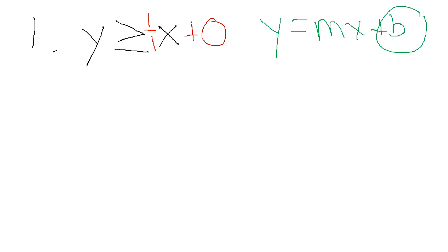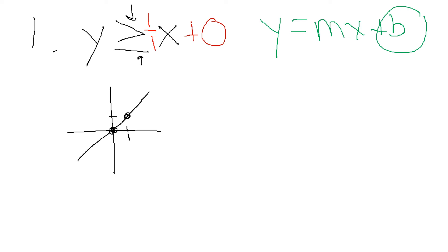So there's my first step — I've gotten into Y equals MX plus B form. Now I'm going to graph it. Always graph your B first; in this case it's 0, so I put my dot right at the origin. Now I'm going to rise 1, run 1. I rise up if it's positive, down if it's negative, and always run right. So from this point, I go up 1 and over 1. Because Y is greater than or equal to, I need a solid line, and I shade the portion above that line.